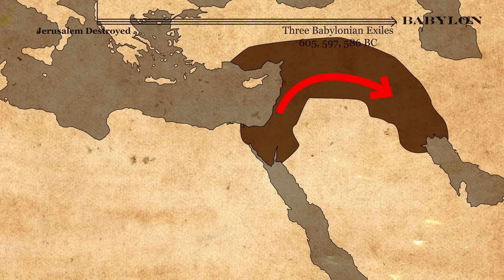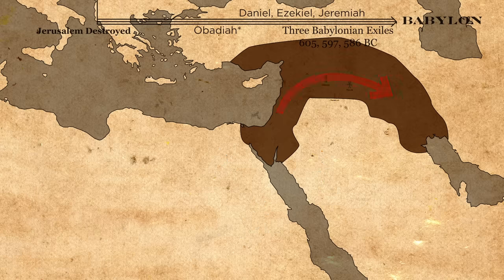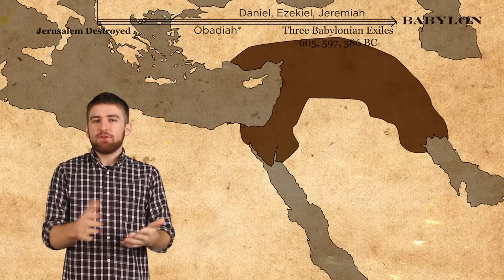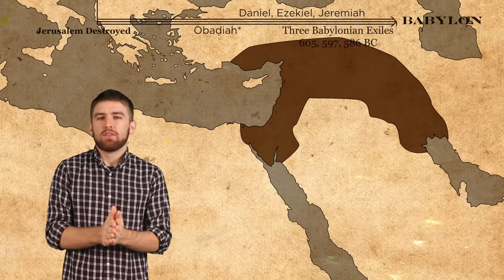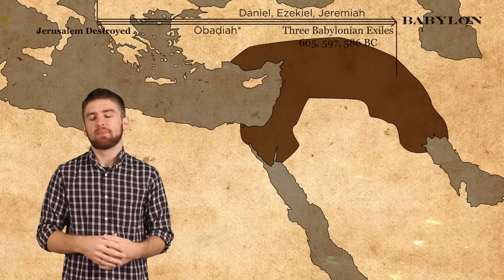The prophets Daniel, Ezekiel, Jeremiah, who also wrote the book of Lamentations, and probably also Obadiah, they all prophesied around this time. For about 50 years, the Jews stayed in Babylon under Babylonian exile.